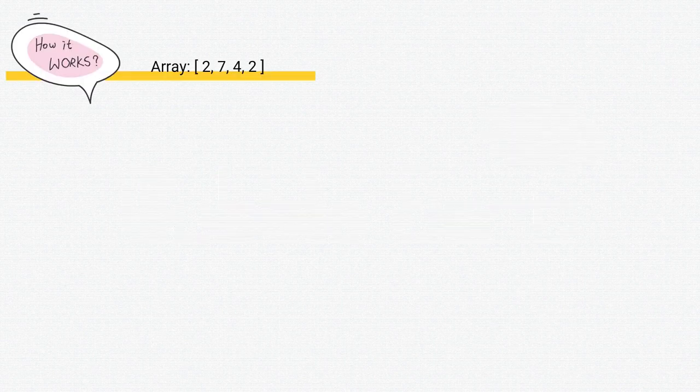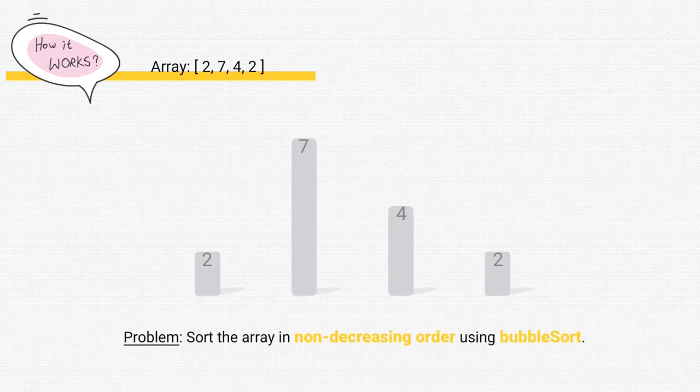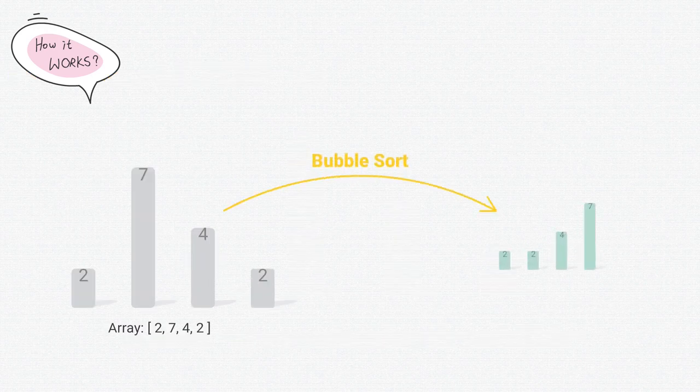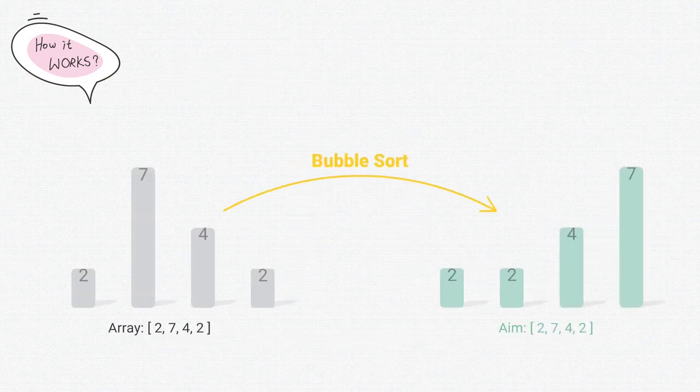Here's an array: 2, 7, 4, 2. The problem is to sort the array in non-decreasing order using bubble sort, so in the end it should be sorted.